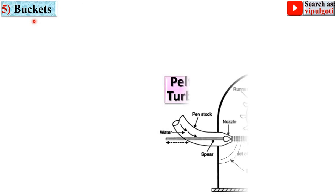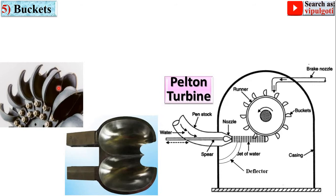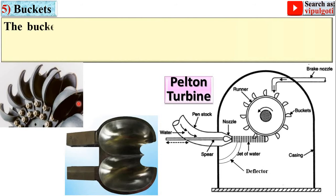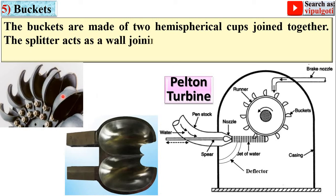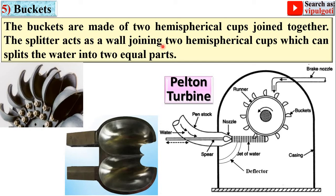Next part: the buckets. The buckets have a double hemispherical shape, made of two hemispherical curves joined together. The splitter acts as a wall joining the two hemispherical curves, which splits the water into two equal parts.